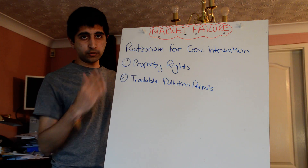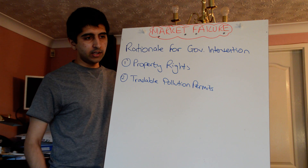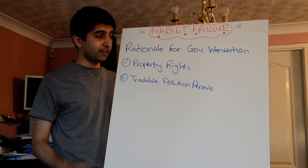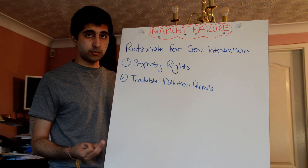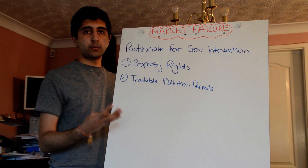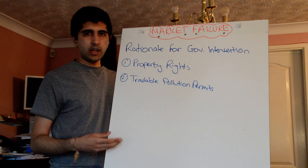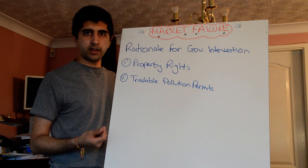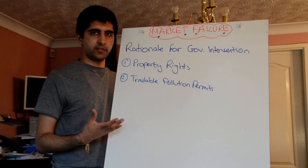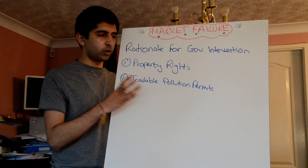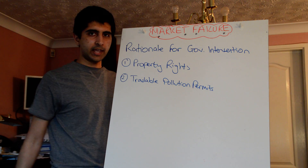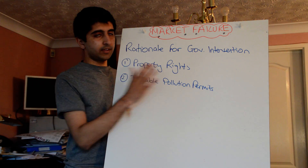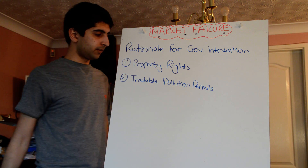But we know there are problems with that: distribution of income concerns, equity concerns, information problems, and problems with assumptions. We need the property rights to be well-defined and enforceable, and in the real world that's not always the case. So that's exactly the same as what we've already covered.